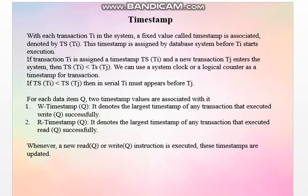The read timestamp, R_timestamp(Q), denotes the largest timestamp of any transaction that executed read(Q) successfully. Similarly, consider T1 with timestamp 1030, T2 with 1035, and T3 with 1040. If T3 is executing read(Q) successfully, the read timestamp will be 1040 — the largest timestamp value at which the read operation was executed successfully on that data item. Whenever a new read or write instruction is executed, the timestamps are updated accordingly.